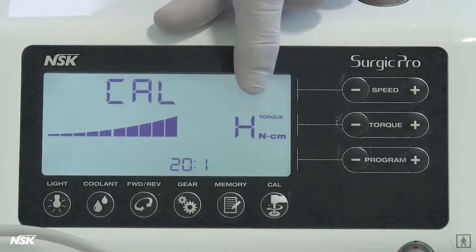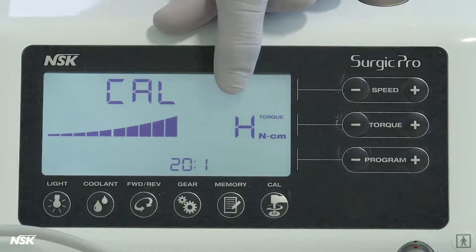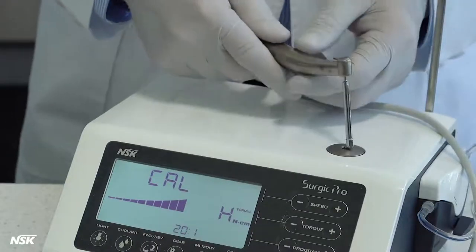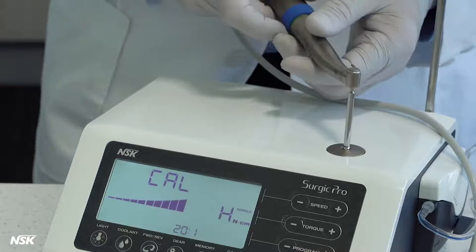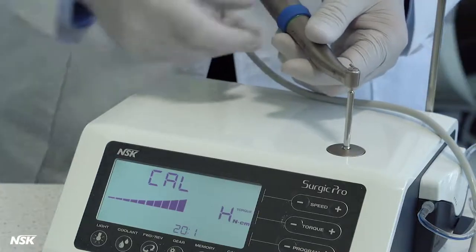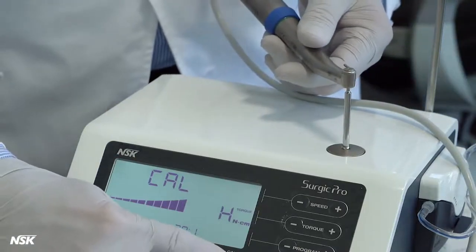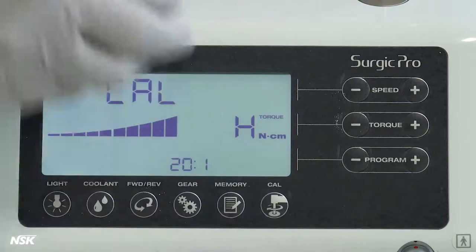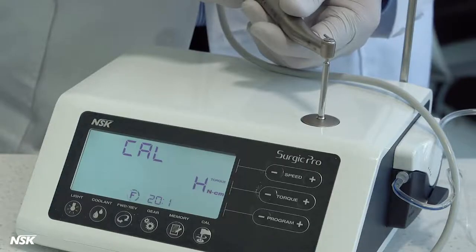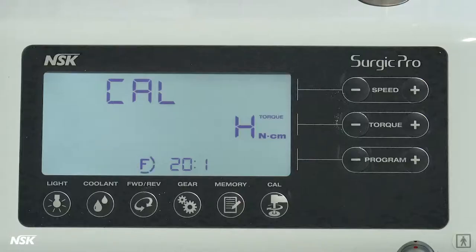Step two, load calibration. Torque display changes to H now. Insert the hexagon head of the drill into the calibration block. Hold the motor tightly so it cannot move left or right. Press the cal key. The drill will begin to rotate the round block rather heavily. Once this part is completed, you will hear a beep and see done on the display.